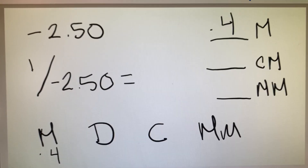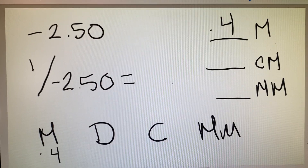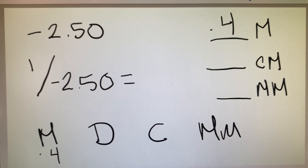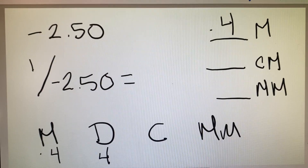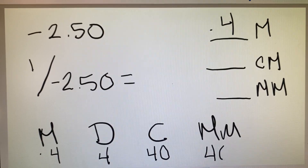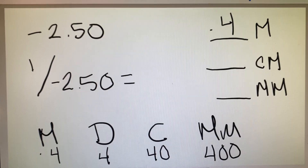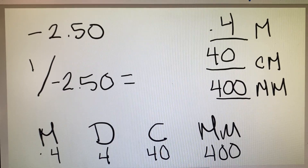We can convert 0.4 meters to other units by moving the decimal to the right. That gives us 4 decimeters, 40 centimeters, or 400 millimeters. So the answer is 0.4 meters, 40 centimeters, or 400 millimeters.